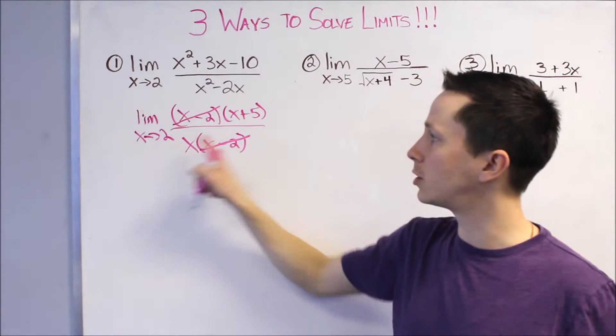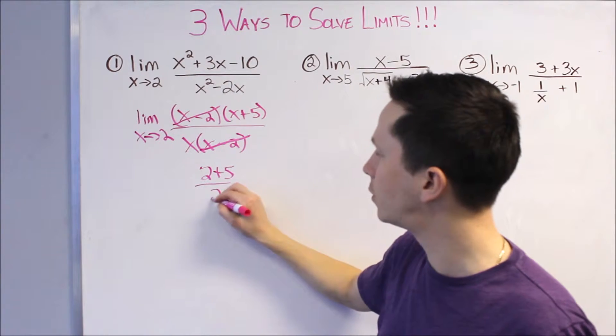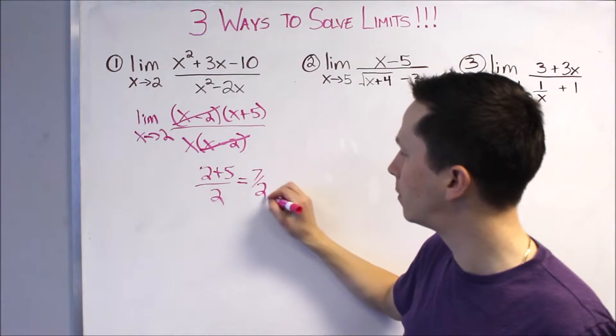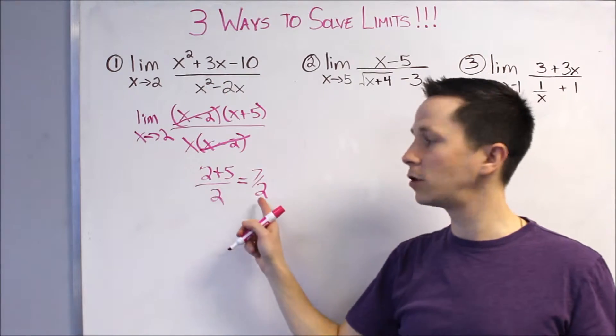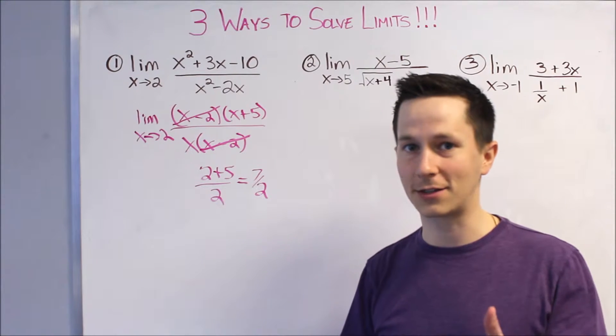No more problem on the bottom, so you can just sub in 2 and you get 2 plus 5 on top over 2 when we plug it in for the X, and that is 7 over 2. So, as X approaches 2 of this function, Y is approaching 7 over 2. That's what a limit means. Factor and cancel, the first method.